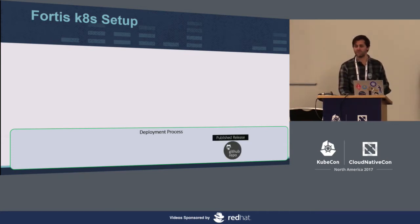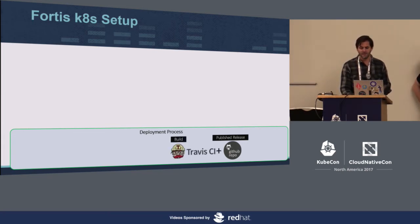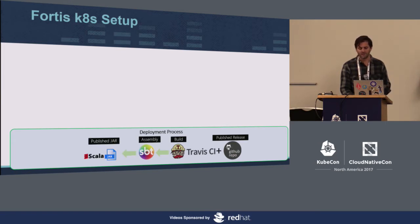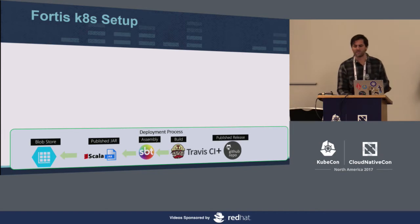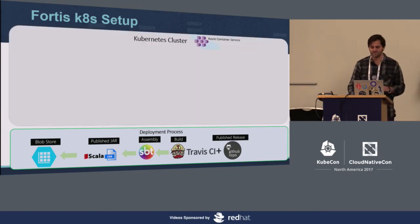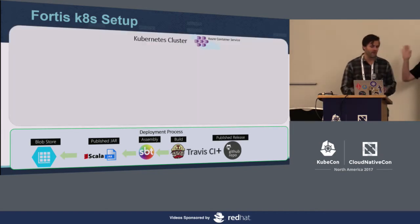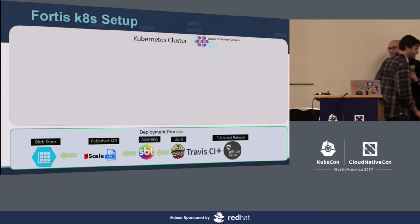All the code for Fortis is open source. The way we deploy our Spark job is: once you cut a new release on GitHub, that kicks off a Travis CI build. We then use Simple Build Tool assembly to generate the fat jar. We take that fat jar and post it to blob storage. Christoph will talk more about the Kubernetes deployment.